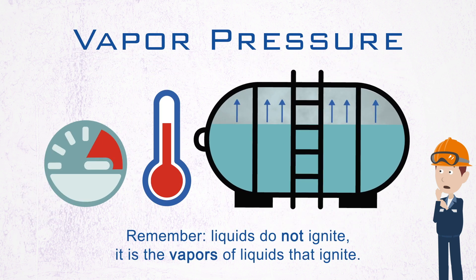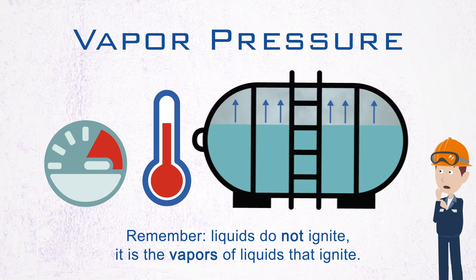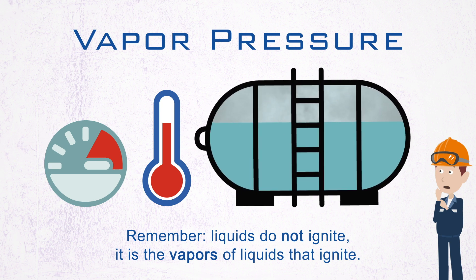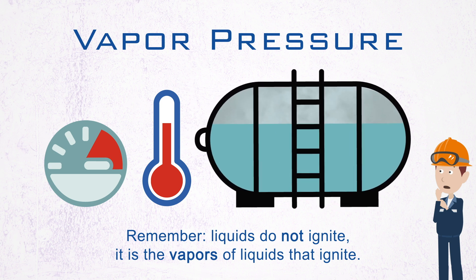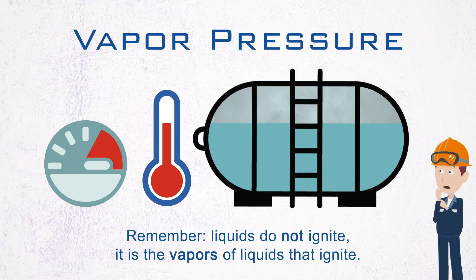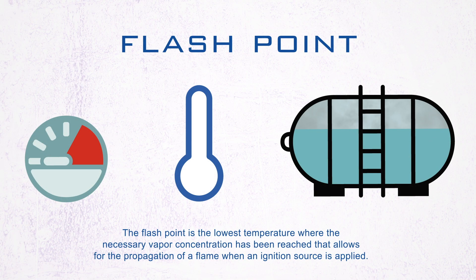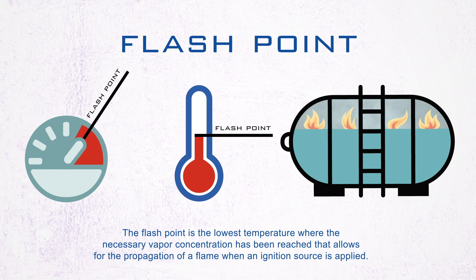Remember, liquids do not ignite — it's the vapors of liquids that ignite. The threshold where a material becomes a flammable hazard is the flashpoint. The flashpoint is the lowest temperature where the necessary vapor concentration has been reached that allows for the propagation of a flame when an ignition source is applied.